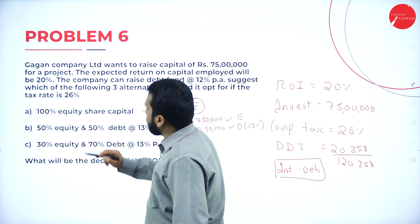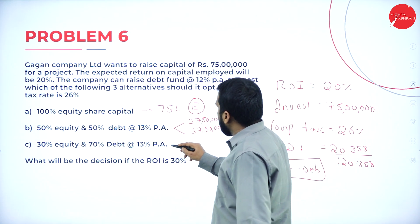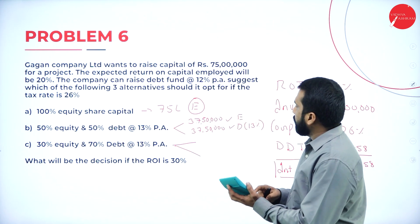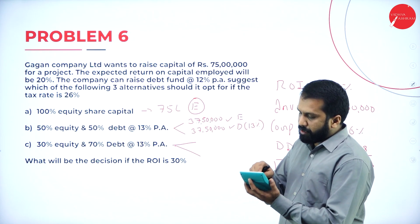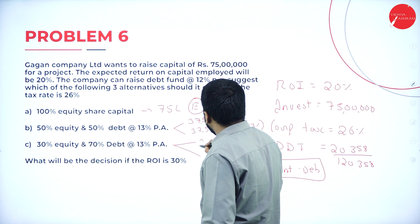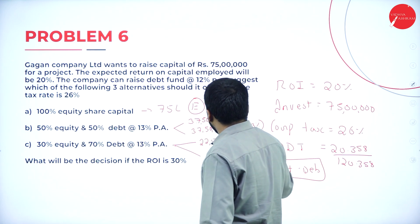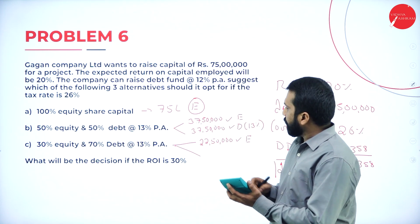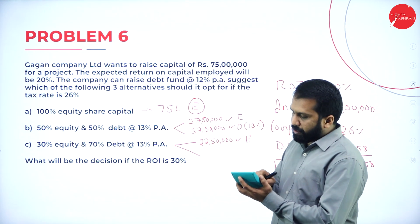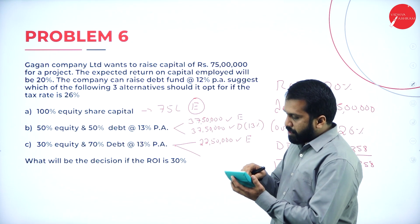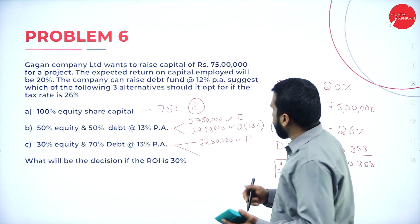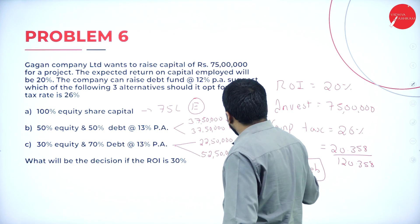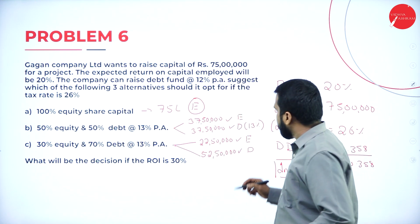Option three: 30% equity and 70% debenture. 30% of 75 lakhs gives 22 lakhs 50,000 as equity. And the balance — 70% of 75 lakhs — gives 52 lakhs 50,000 as debenture, also at 13% interest.